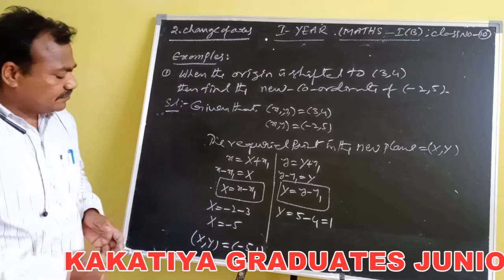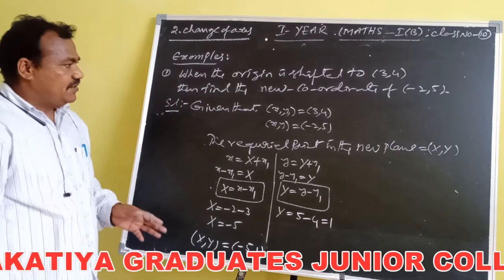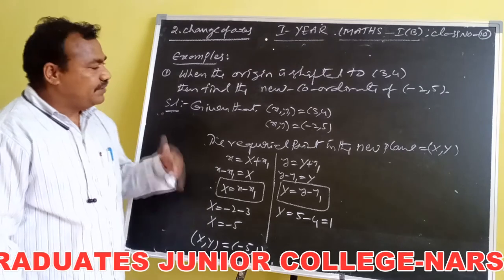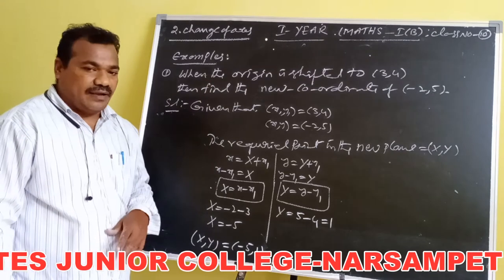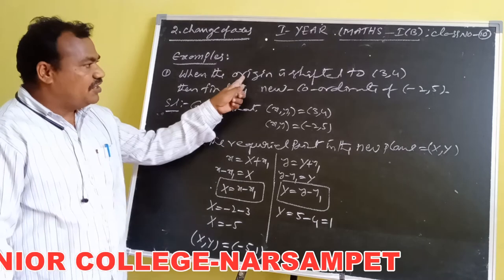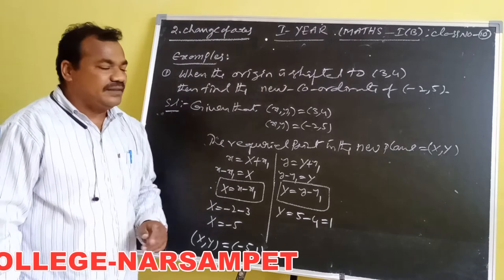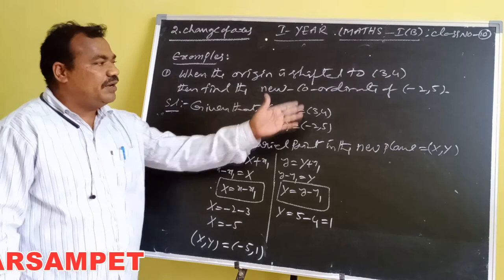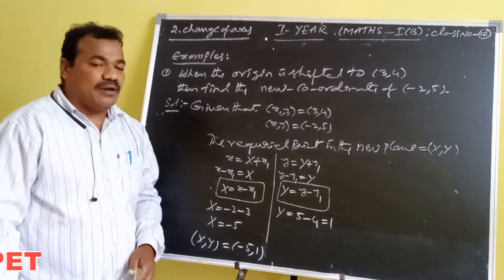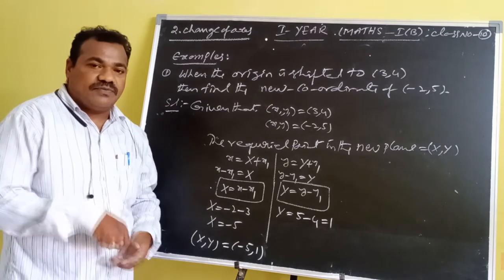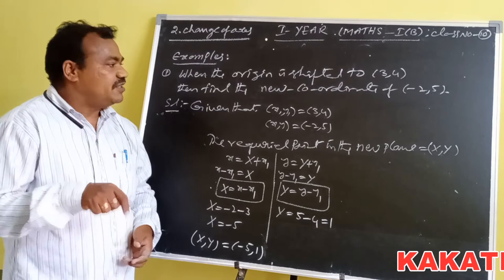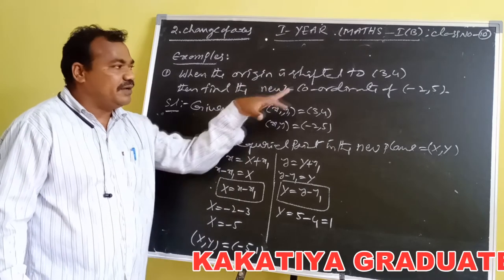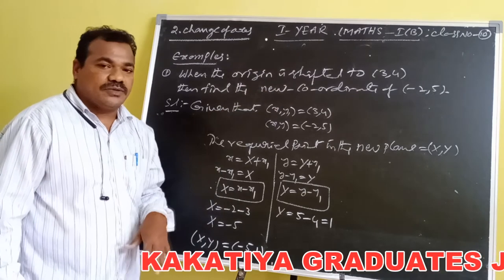By the translation of axes — translation of axes means without changing the direction of coordinate axes, the origin is shifted to the point (3, 4) — we find the coordinates of (−2, 5) in the new system. The new coordinates are (−5, 1).